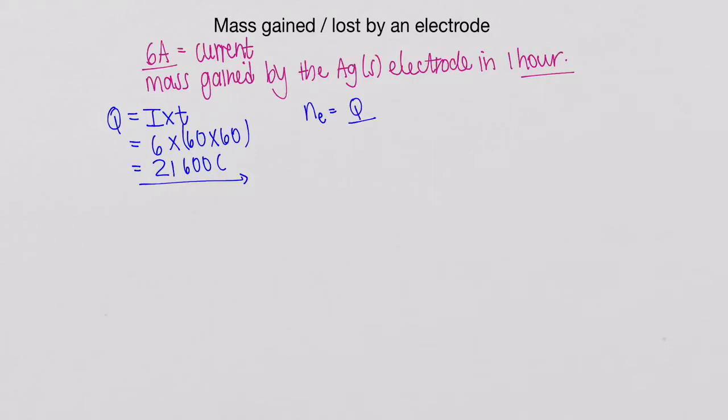remember that is the charge over the charge of one mole of electron. So let's now take that 21,600, and let's divide it by that constant value that I gave you on the last screen. So that is 96,500. And we will work that out,